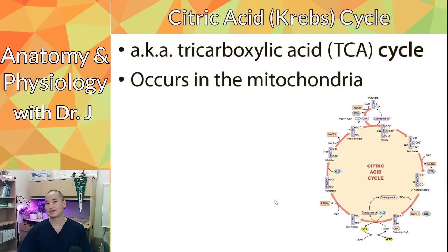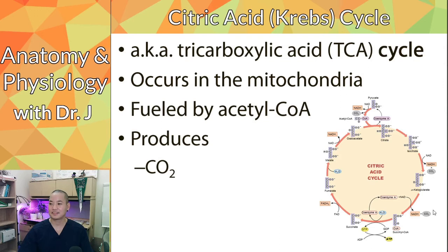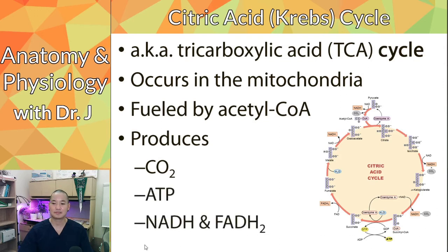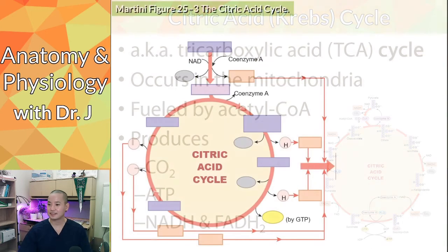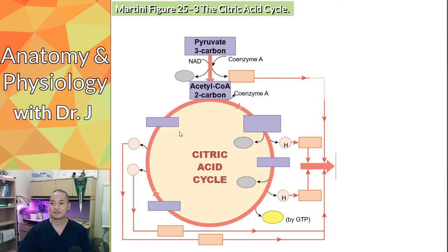Remember, the mitochondria is the powerhouse of the cell — and this is one reason why. The mitochondria takes acetyl-CoA and extracts energy from it, producing carbon dioxide, ATP, and very importantly, NADH and FADH₂. This is a simplified version of the citric acid cycle that doesn't go through all eight intermediates.